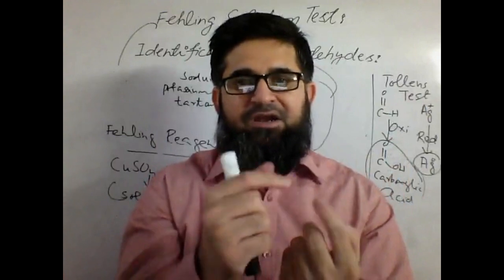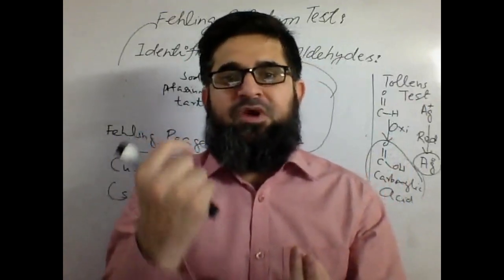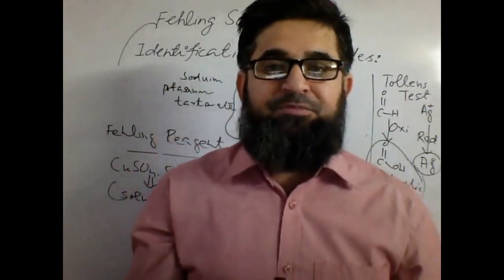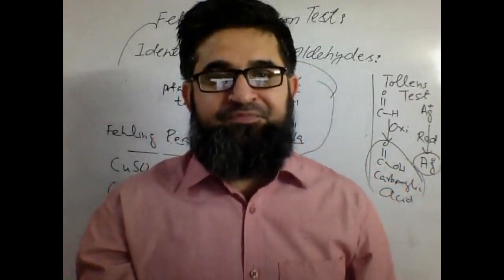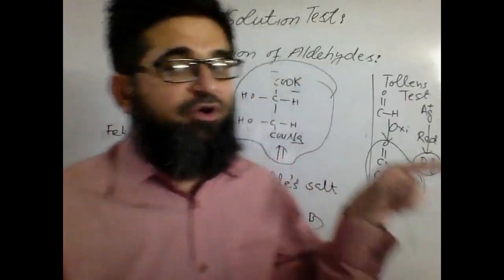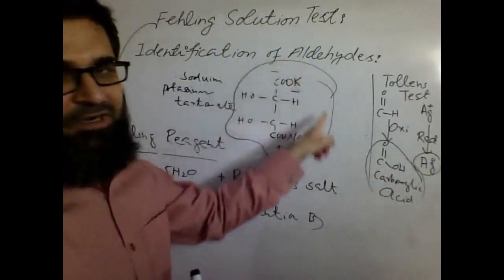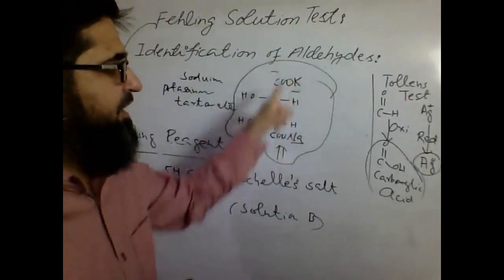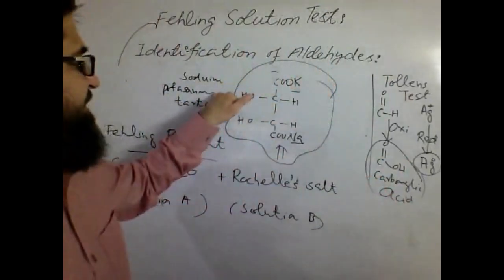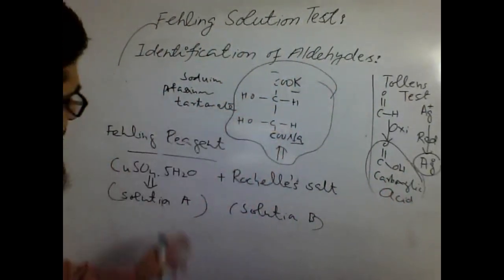So Fehling's reagent is a mixture of two solutions: Solution A is copper sulfate pentahydrate dissolved in water; Solution B is sodium potassium tartrate dissolved in water — sodium potassium tartrate is also called Rochelle's salt.